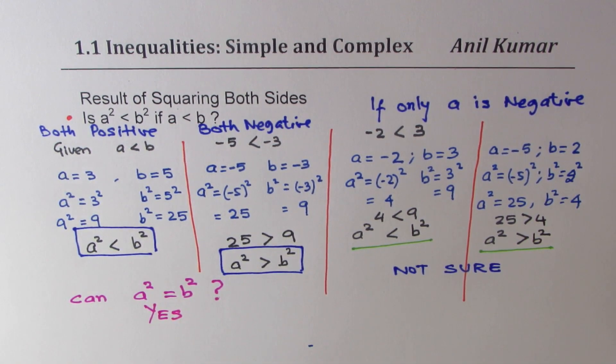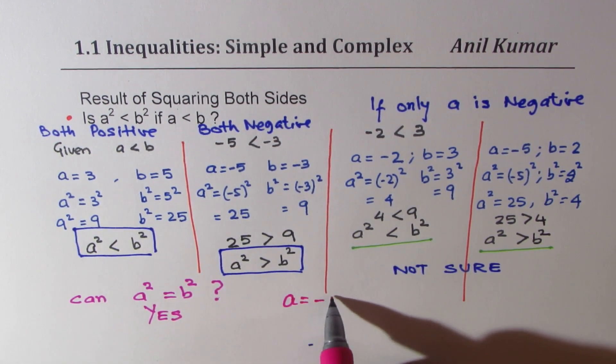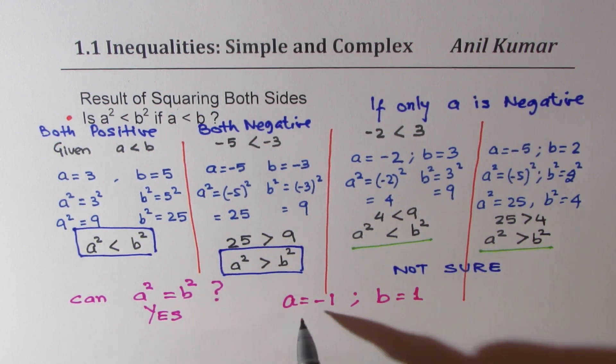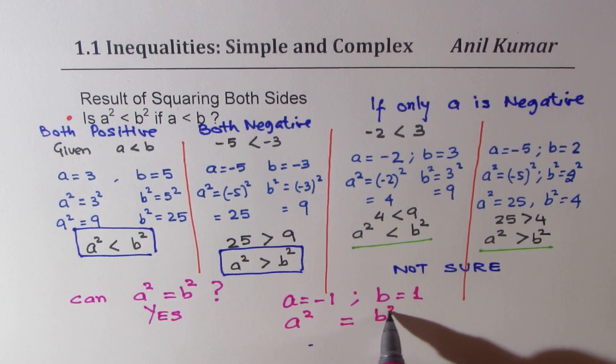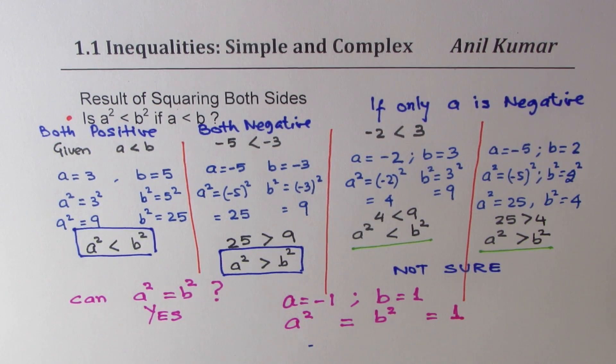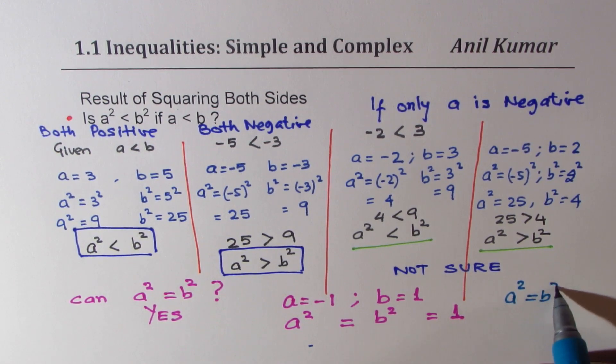When? If I take a = -1 and b = 1, in that case, a² equals to b², and both are equal to 1, do you get that part? So, we may also get a situation where both are equal. We get a situation that a² = b².